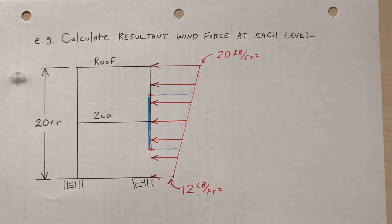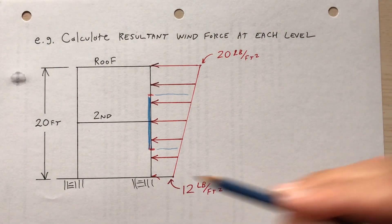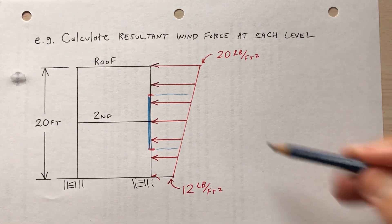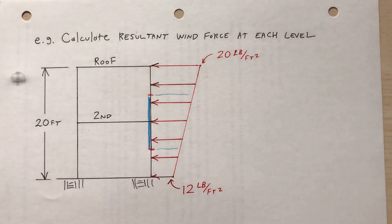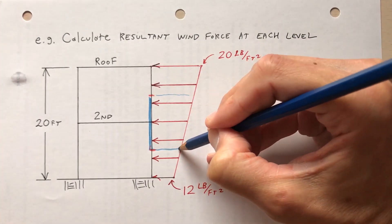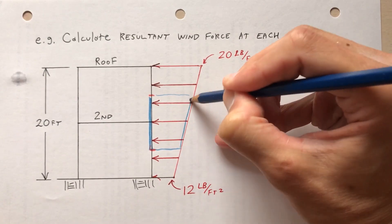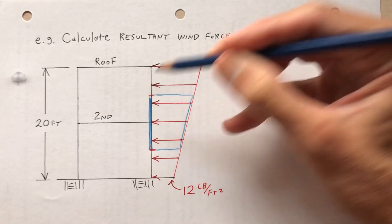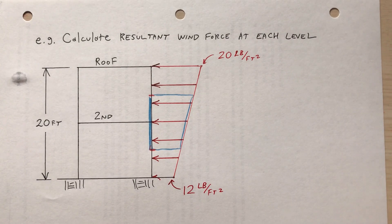So I'm assuming a trapezoidal wind load distribution that's 12 pounds per foot at the very base and 20 pounds per square foot up at the roof. So this portion right here, this load right here, is tributary to what will be carried by the second floor. And then as far as the roof is concerned,